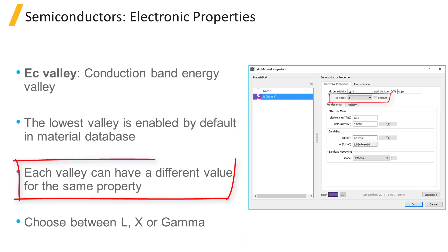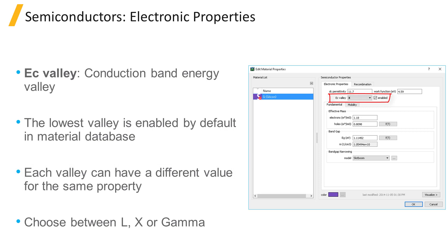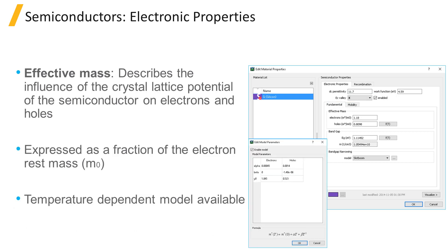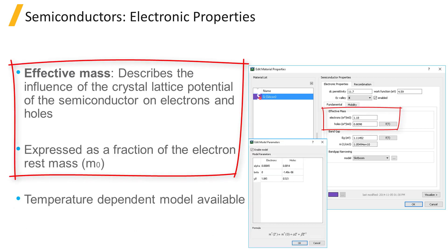For each valley, a different set of semiconductor properties can be specified, and by default only those from the lowest valley are used. The user can choose to change this by picking between the L, X, or gamma valleys. To account for the influence of the crystal lattice potential of the semiconductor, electrons and holes can be approximated as free charges with an effective mass relative to the electron rest mass that can depend on the electronic band structure of the material.